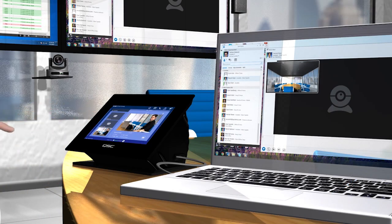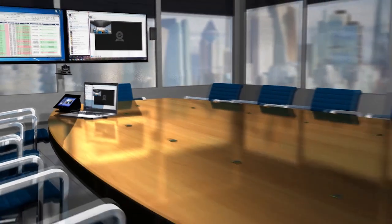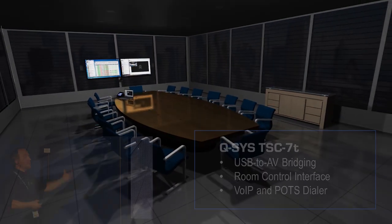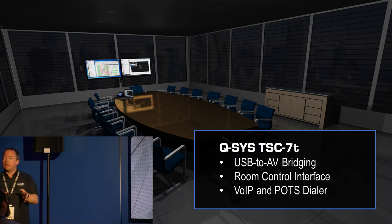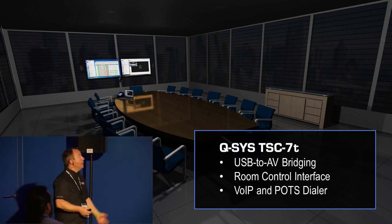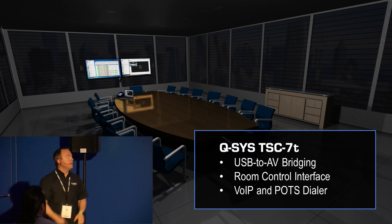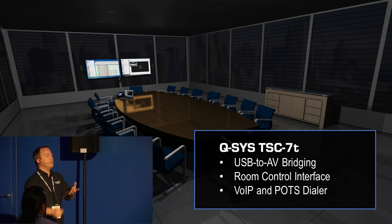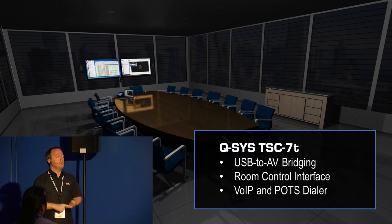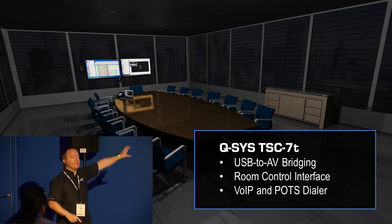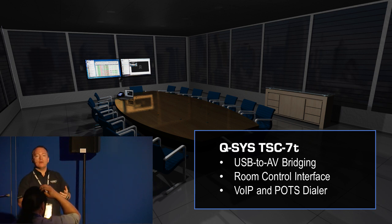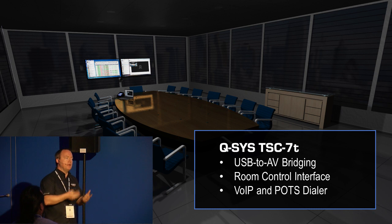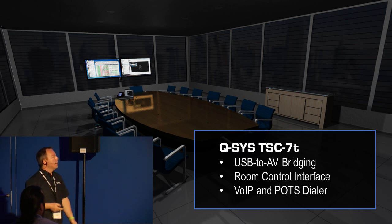When we launched the TSC-7T at last year's Infocom, we were presenting it as a touch screen dialer and control interface. You can use this to interface with voice over IP dialing, bring up your contacts list and keypad, do the same for your analog telephone line and POTS dialer — all presented on that touch screen device. You can also use the same touch screen to control the room — the lighting system, shades, or the video display on flat panel monitors. It's a control interface for the control engine running inside Q-SYS. And now with this release, we can also use it as the USB-to-AV bridging solution.